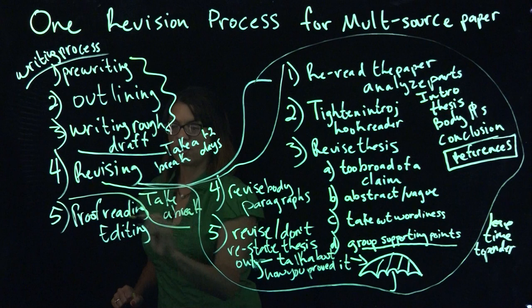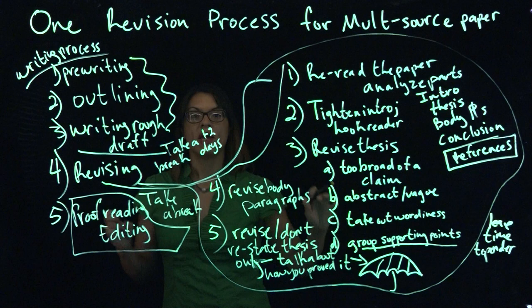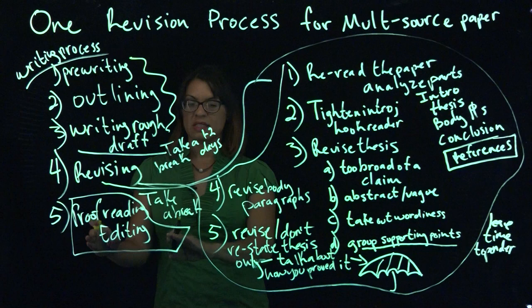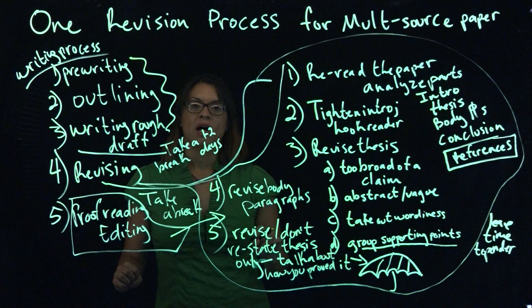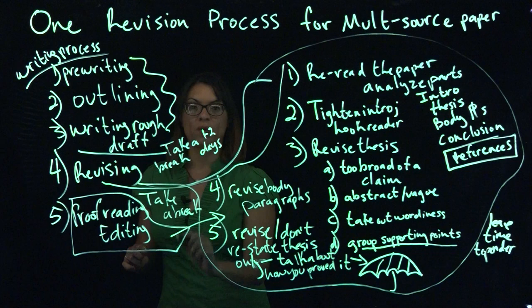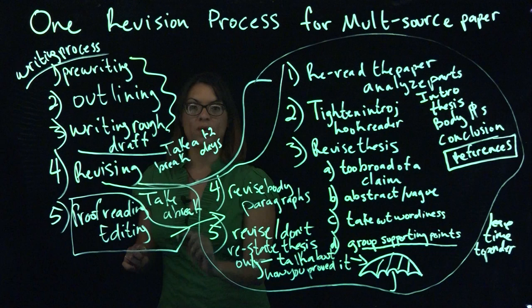And then return to proofread and edit at another time, at another time that you sit down and work on the paper. When you're at the proofreading and editing stage, you're not adding ideas. Don't add new ideas at this stage. Just go through and tighten up the paper, get rid of unnecessary words, work on your citation, things like that. Check for grammar, do a spell check, even have someone else read it.